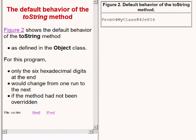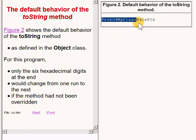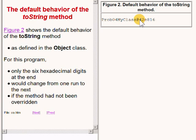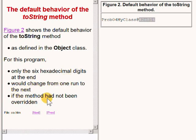In particular, the default behavior is to return a string that begins with the name of the class from which the object was instantiated, followed by an at character, followed in turn by six hexadecimal digits. For this program, only the six hexadecimal digits at the end would change from one run to the next if the toString method had not been overridden.